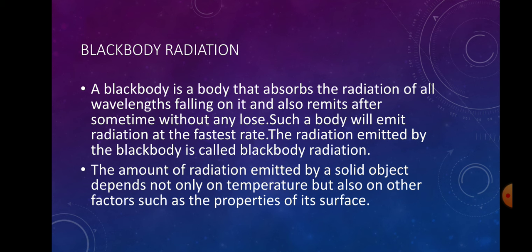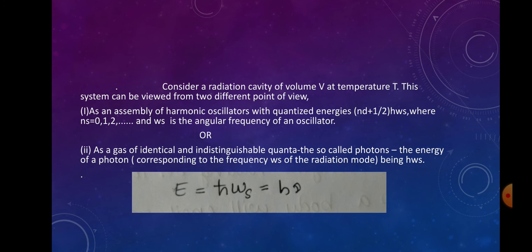A solid object will emit radiation by an amount that depends on the properties of its surface. This black body will be used as a natural black body, as a laboratory base black body, and as a perfect black body.